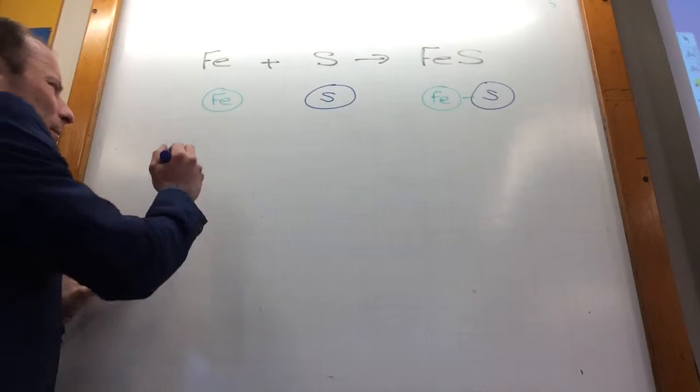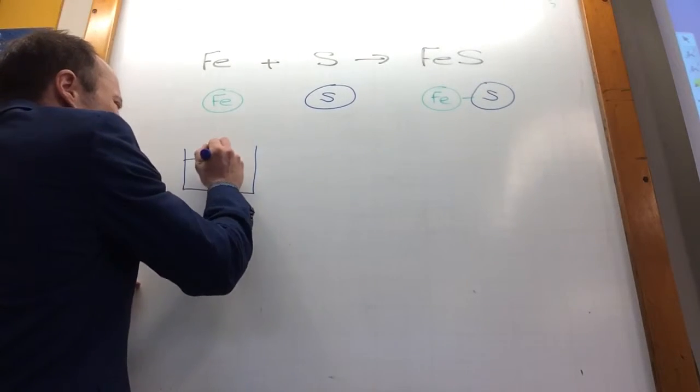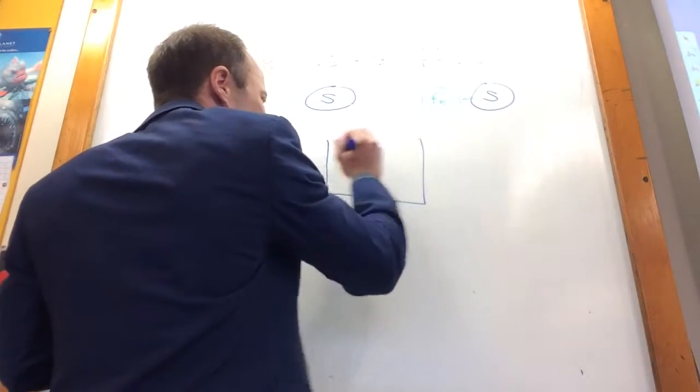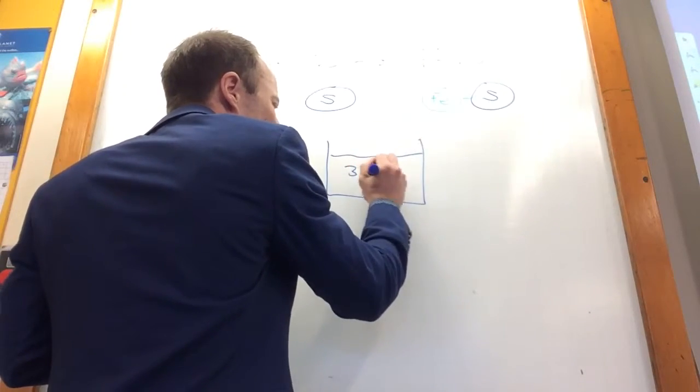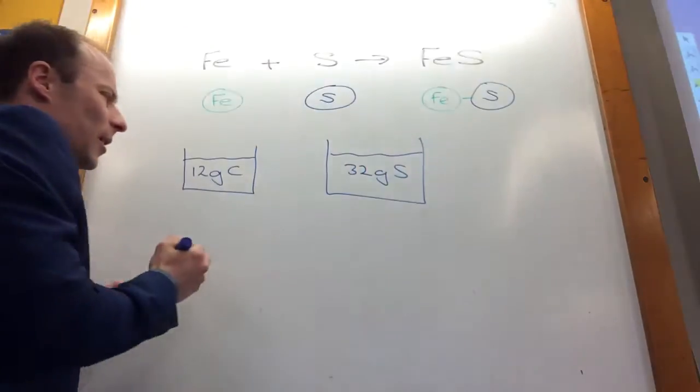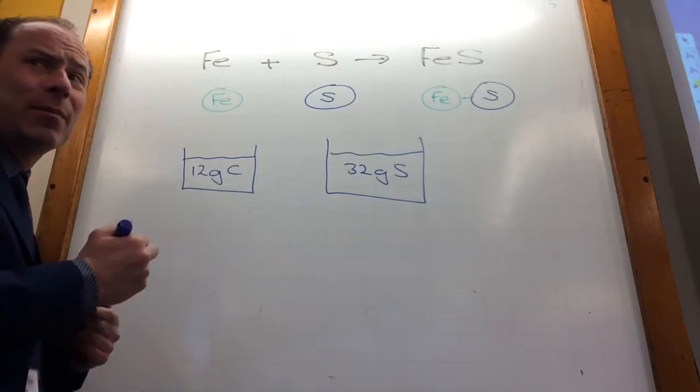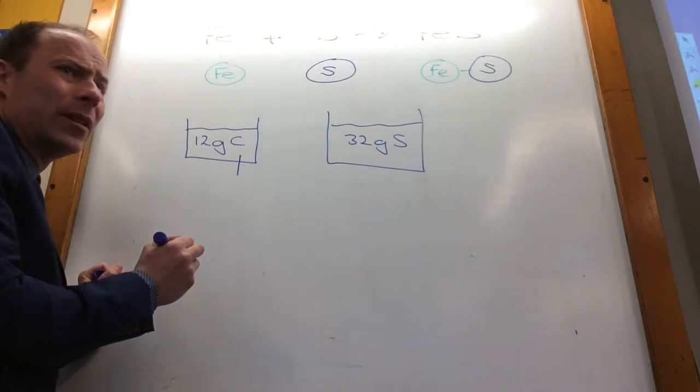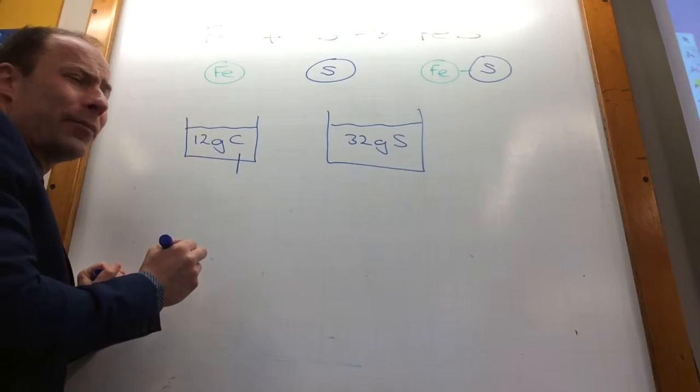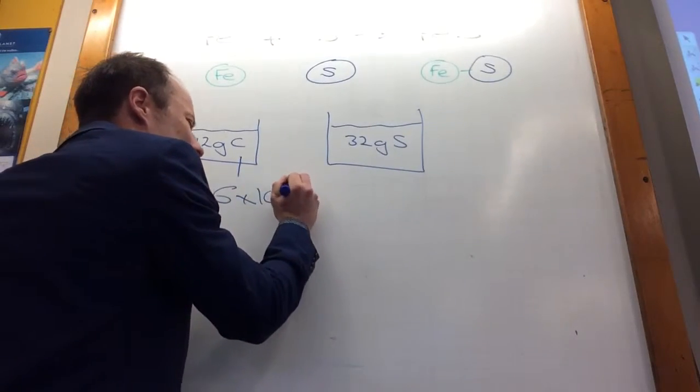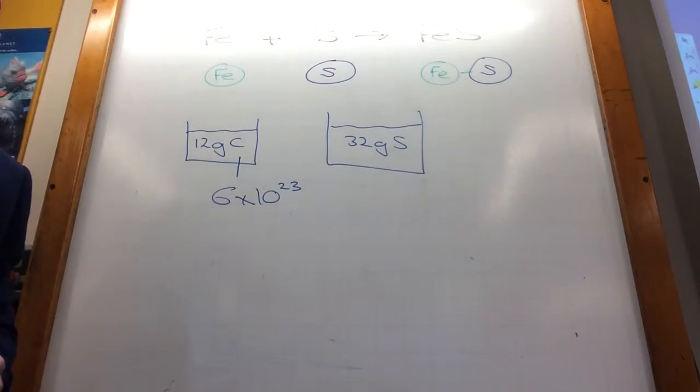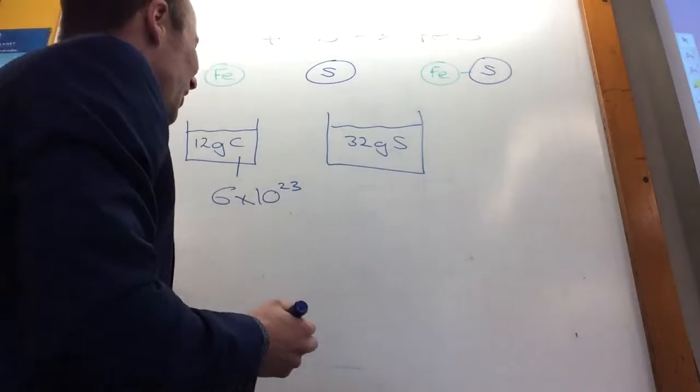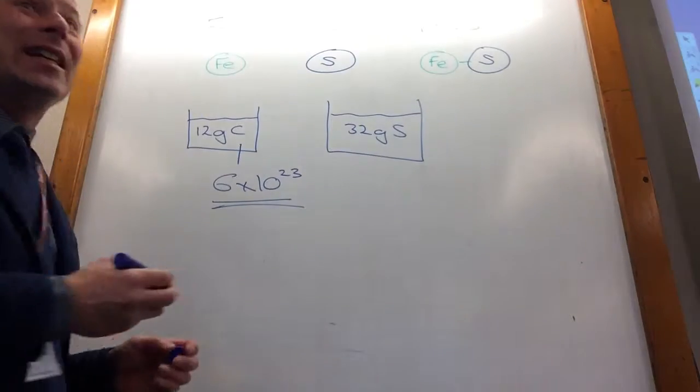And it so happens that we can work with a mole. A mole is just a number. If I take 12 grams of carbon or I take 32 grams of sulfur, both of those contain the same number of atoms in them. Can anybody remember what I call that number? The number is actually 6 times 10 to the 23. Can you remember it's called Avogadro's constant? Good.